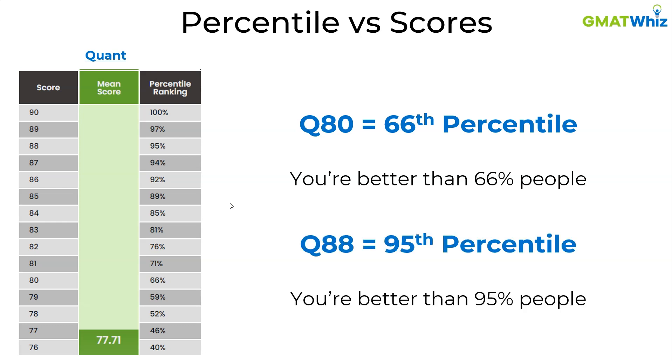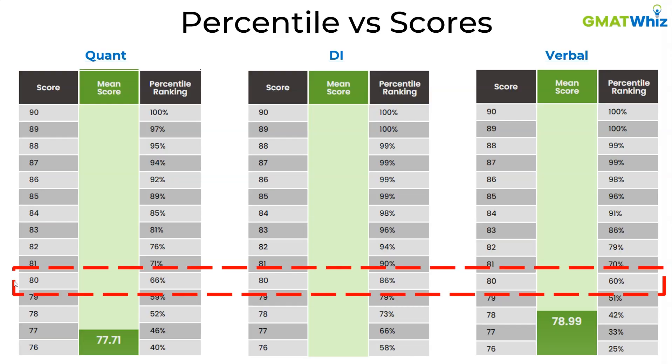Now, telling the percentile directly would have probably been much simpler, but that's the GMAT way — they tell you a score against a percentile. Similarly, if you have a quant 88, that means you are in the 95th percentile, better than 95%. But does this mean that 80 in quant and 80 in verbal both relate to a 66th percentile? That's not true. In different sections, the mapping is very different. You can see on the screen right now that 80 in DI is an 86th percentile, and verbal 80 is a 60th percentile.